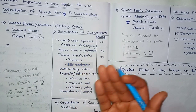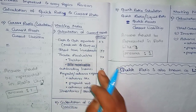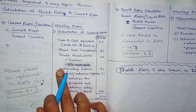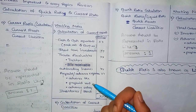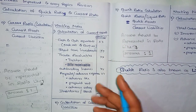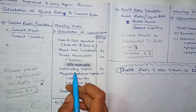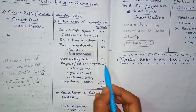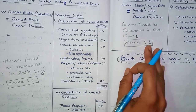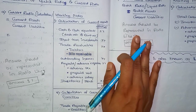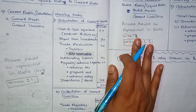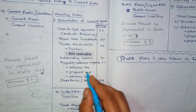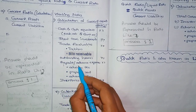Next, outstanding income — that is income due but not yet received, such as interest receivable and rent receivable. Next, prepaid or advance expenses — these are payments made in advance. For example, prepaid salary, prepaid interest, advance tax, prepaid rent. These are current assets.